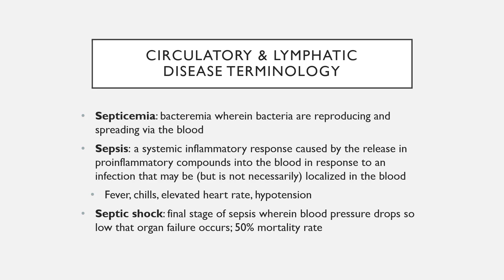When blood pressure is this low it cannot be controlled by the addition of fluids, making it a very dangerous state. The reason hypotension occurs is that part of the inflammation response is vasodilation — blood vessels expand their diameter to allow blood to reach tissues more easily, bringing leukocytes and antimicrobial compounds. In sepsis, this reaction gets out of control: vasodilation takes place throughout the entire body, causing a dangerous drop in blood pressure — an immune response that is counterproductive in its level of enthusiasm.